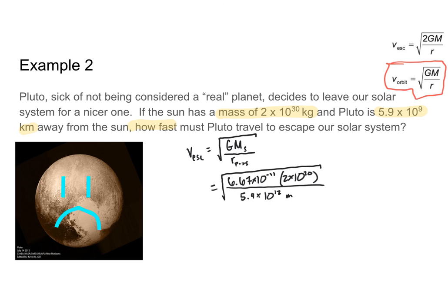Plugging that into the calculator, the escape velocity is about 4,800 meters per second, rounding to two sig figs. That is the minimum speed Pluto would have to travel to escape the sun. For context, the speed of sound is 343 meters per second, so Pluto would have to be traveling almost 14 times the speed of sound in order to escape the sun's gravitational field.